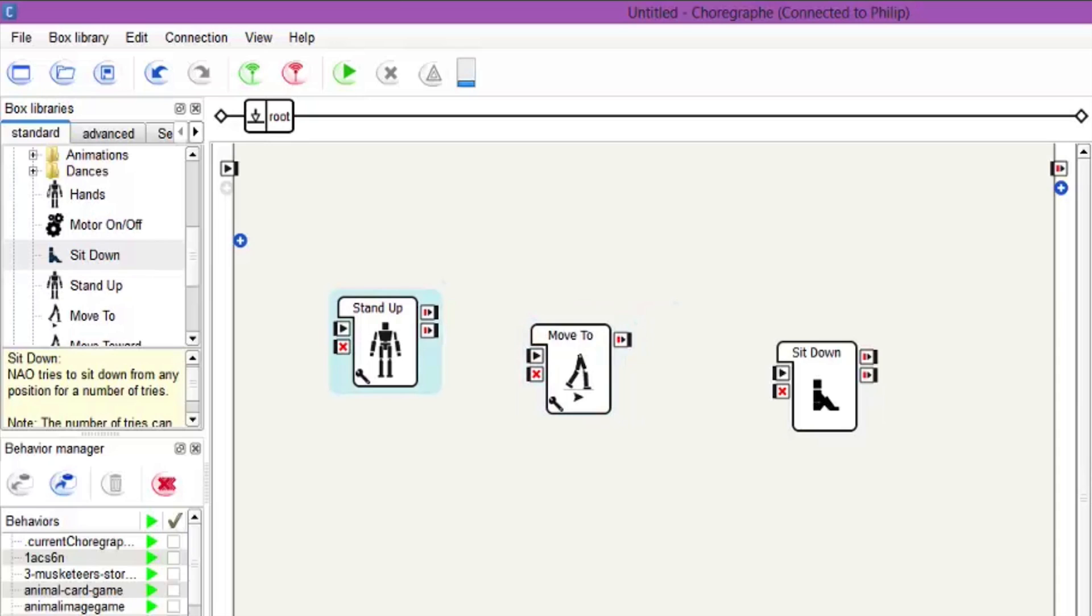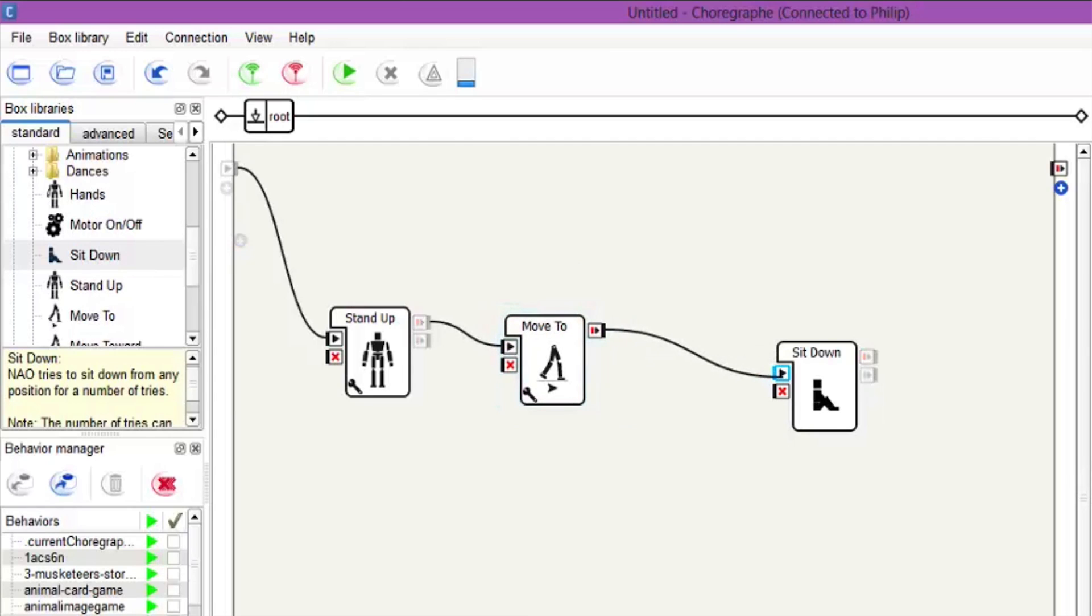Let's connect up the noodles, so one noodle there, brilliant, and then another noodle into the actual movement and then one noodle into the sit down afterwards.